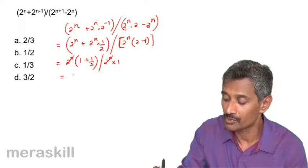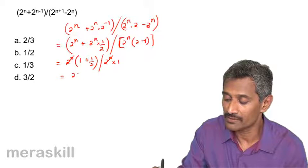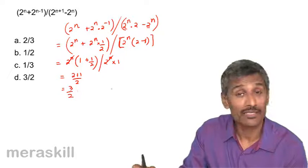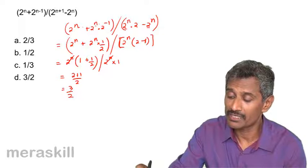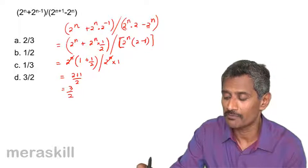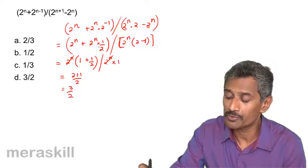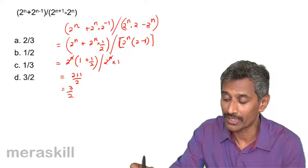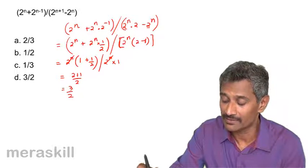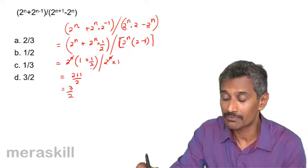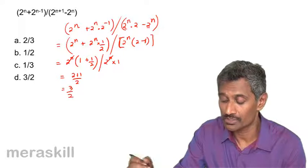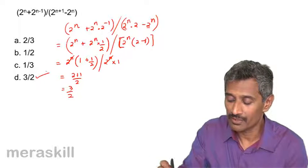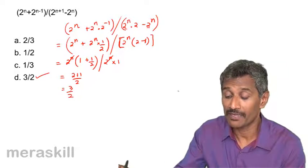This gives us 2 raised to n into 1 plus half, divided by 2 raised to n into 1. The 2 raised to n cancels, so we get 1 plus half, which is 3/2. The answer is 3/2. Let's verify — yes, that is the option.